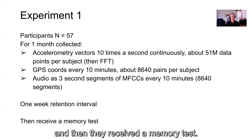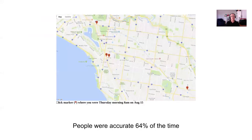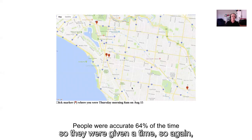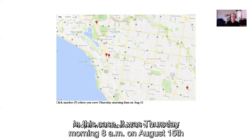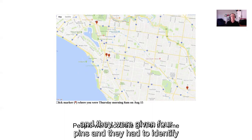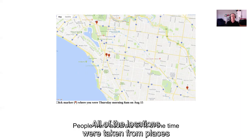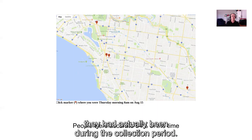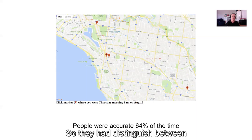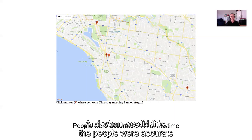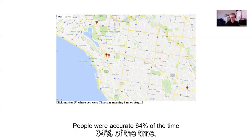There was a one-week retention interval, and then participants were tested. In the test, they received a series of trials where they were given a time — for example, Thursday morning, 8 a.m. on August 15th — and four location pins. They had to identify which of the four locations they had been at at that time. All locations were taken from places they had actually been during the collection period.